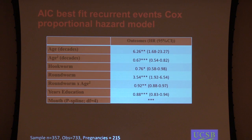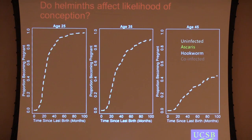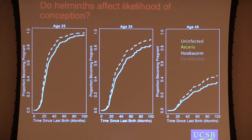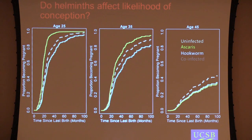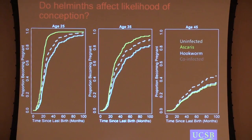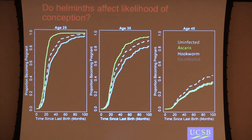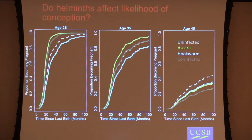This is what the best fit model looks like. Rather than go over the model, I'll show you the proportion becoming pregnant at different ages — age 25, 35, and 45. Interbirth intervals get longer as you go along. The uninfected women are the baseline. Women with hookworm have a somewhat lengthened interbirth interval — a reduced hazard of conception. Women with roundworm actually have shortened interbirth intervals — an increased chance of becoming pregnant. For co-infected individuals, the hookworm effect is the same at all three ages, but the ascaris effect — the acceleration of reproduction and shortening of interbirth intervals — is primarily early in age and declines with age. So co-infected individuals have shortened interbirth intervals early on and longer interbirth intervals later in the lifespan.